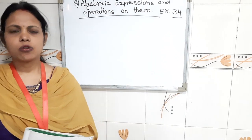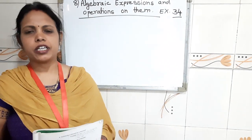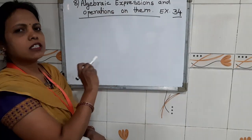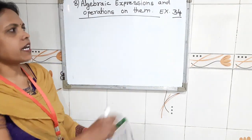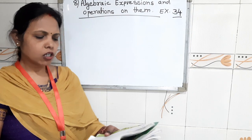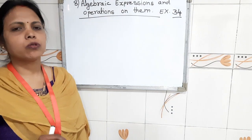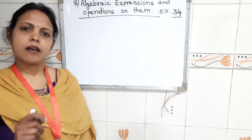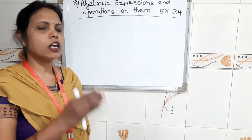So children, today in that expectation, we are going to continue our 8th chapter, Algebraic Expressions and Operations on them. In our exercise 34, we are going to study subtraction. In exercise 33 and 32, we had completed the terms related to monomial, binomial, trinomial, and polynomial. I hope you all understood that.